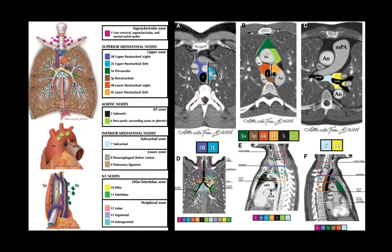One really important thing to consider is that lymph nodes anterior to the trachea are considered right paratracheal, whereas lymph nodes to the left of the left margin of the trachea are considered left paratracheal. So in practice, if you have a lymph node that's anterior to the trachea, even if it's directly in the midline, if that's a right lung cancer then that's an N2 node, but if it's a left lung cancer, then that's an N3 node.